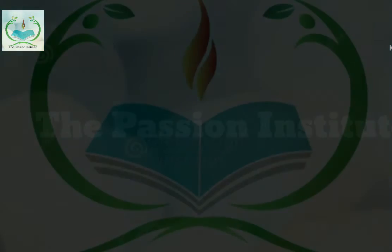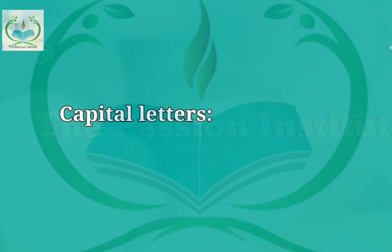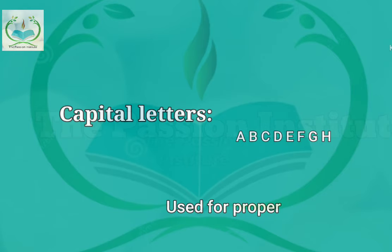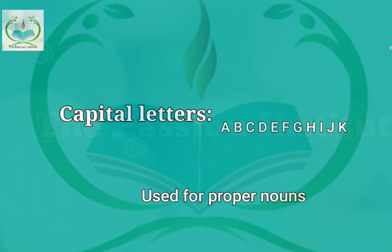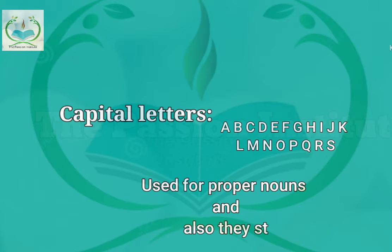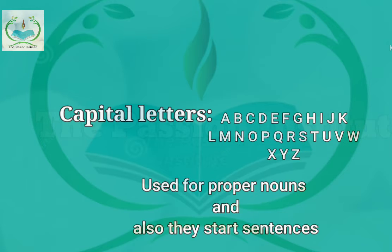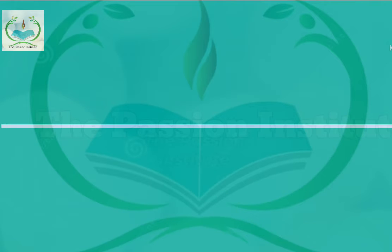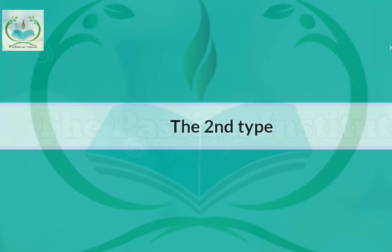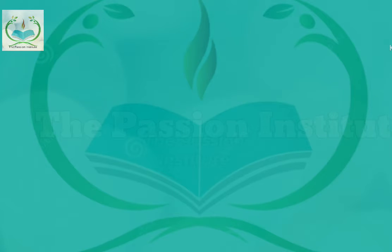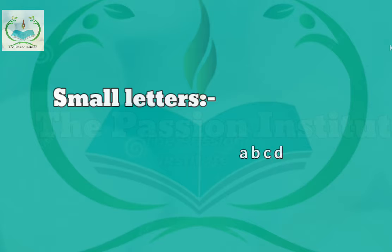The first type is capital letters. Capital letters are also called big letters. Capital letters are used for proper nouns. They are also used for starting a sentence or a topic. The second type of alphabet is small letters.